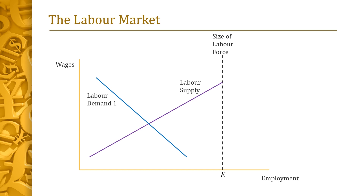A graph can shed further light on the effects of labor demand shocks. A diagram of the labor market is depicted on the slide. Employment is on the horizontal axis, while wages appear on the vertical one. The total size of the labor force, E-bar, appears as a vertical dashed line — this is the maximum amount of labor that can be employed. The intersection of the supply and demand curves determines the wage W and the employment rate E in equilibrium. Unemployment U is just the difference between the total size of the labor force E-bar and employment E.